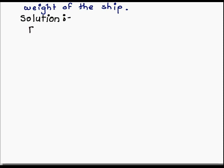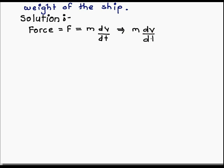To find the solution, we know that by Newton's second law of motion, force is equal to mass into acceleration. Here the force is the resistance to movement of the ship through water in the form of a square plus b square into v square. As it is a resistance, we consider the minus sign. So F is equal to minus bracket a square plus b square into v square.